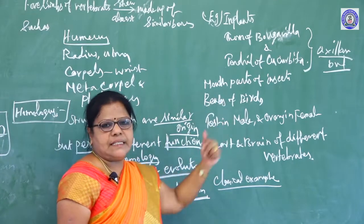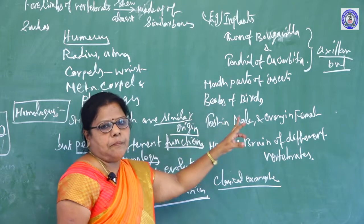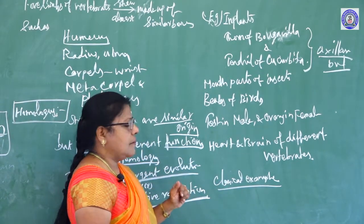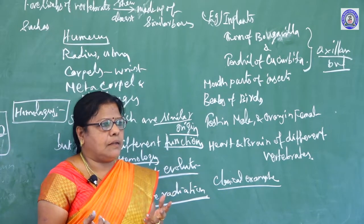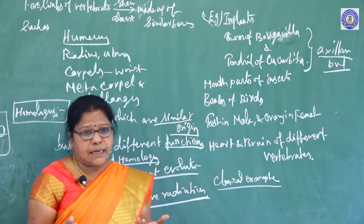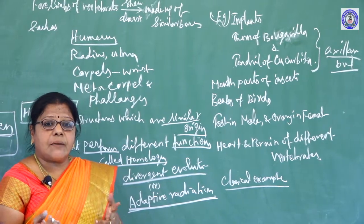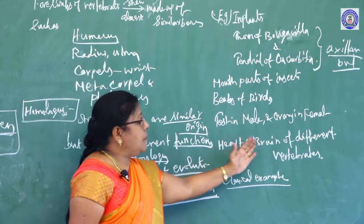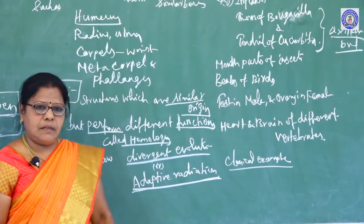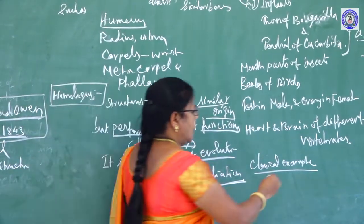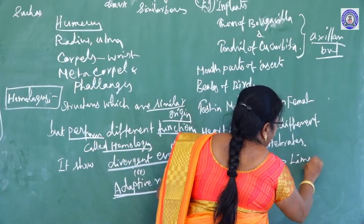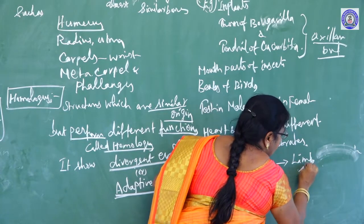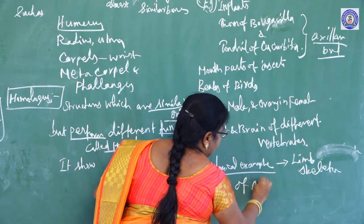Second example: mouthparts of insects. In animals, Darwin's finches is one of the classical examples of adaptive radiation. Also, testis in males and ovary in females. The forelimbs of the cat and lizards are used for walking; forelimbs modified as flippers in the whale, functioning like paddles; four limbs of the bat modified as wings for flight. Heart and brain of different vertebrates are also examples of homologous organs. The classical example is the limb skeleton of all vertebrates.